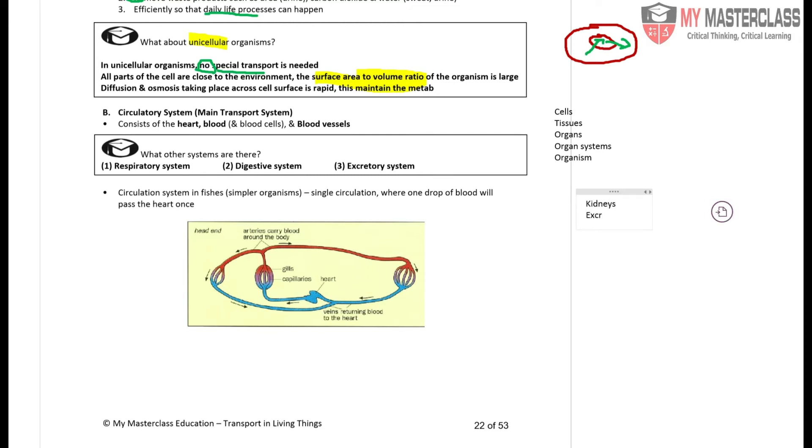The excretory system involves the kidneys, in which substances are being excreted out. These substances include harmful substances, and if we have excess water, these will be excreted out in the form of urine.